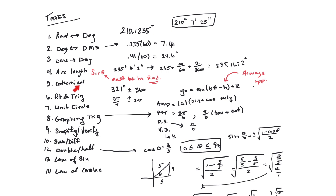Coterminal angles: add or subtract 360 degrees, or add or subtract 2π for radians, to find coterminal angles. Sometimes you're asked for both a positive and a negative coterminal angle. If you start with something like 1021 degrees, you'd have to subtract 360 multiple times before getting a negative angle measurement, so be aware of that.